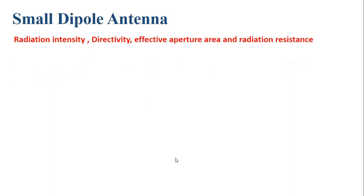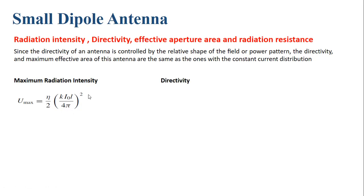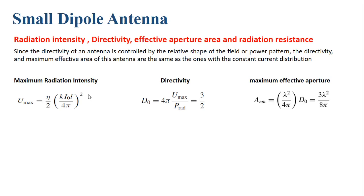Now considering the different parameters — radiation intensity, directivity, effective aperture area, and radiation resistance — since the directivity is controlled by the relative shape of the field or power pattern, the directivity and maximum effective area are the same as for the constant current distribution. The maximum radiation intensity is the same as the infinitesimal dipole: U_max = (η/2) · [ki₀l / (4π)]². The directivity D₀ = 4πU_max / P_radiated = 3/2, and the maximum effective area A_em = (λ²/4π) · D₀ = 3λ²/(8π).